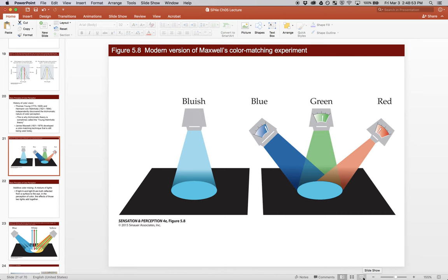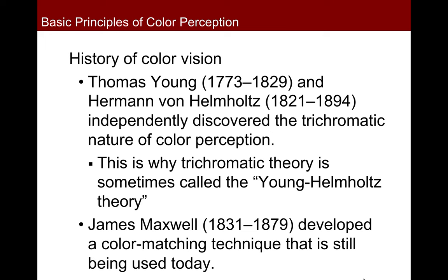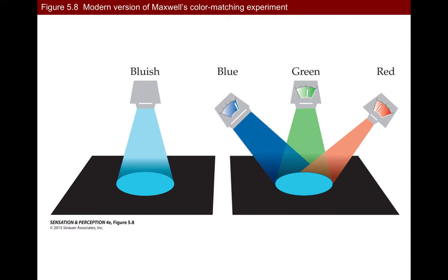Picking up here on the slide where we were talking about James Maxwell's color matching technique, and it's still used today. The way it works is you've got a light that shines on a screen on the left — in this case, it's like a cyanish blue light. On the right screen, you've got three spotlights: blue, green, and red, corresponding to short, medium, and long wavelengths, all shining at the same spot. You allow the participant to crank up the blue, green, and red lights to match the spot you see on the left. This is the method of adjustment that we talked about at the beginning of this course.